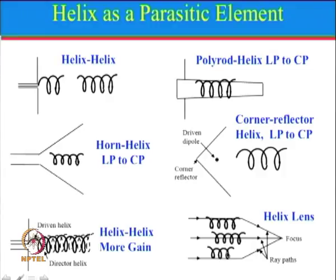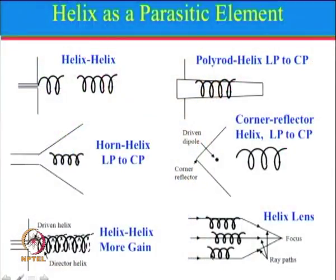Another arrangement is the helix lens antenna. Recall the concept of a lens antenna: when a wave comes in parallel, the lens focuses it to a focal point — waves at the edge travel a longer path than those at the center, but the lens property ensures focusing. Here, helical antennas are arranged in such a fashion that they act as a lens antenna, focusing the beam at a given point. So these are the different applications of the helical antenna.